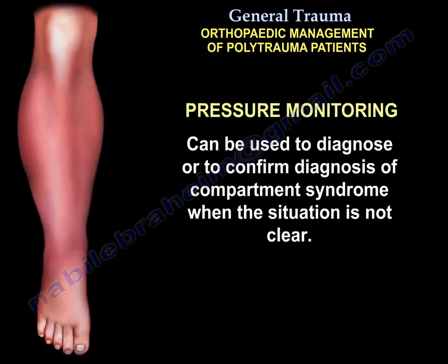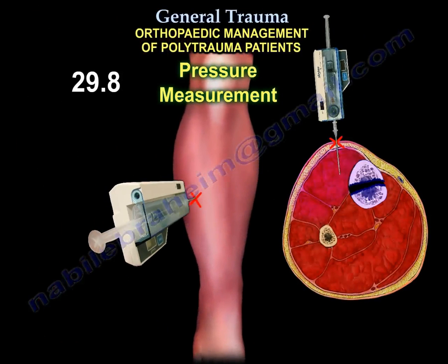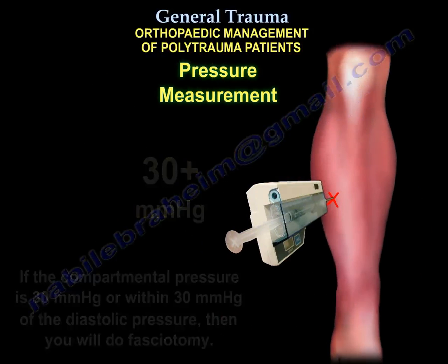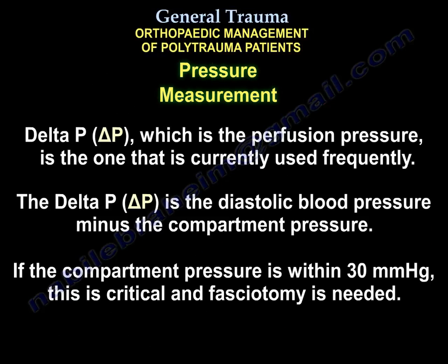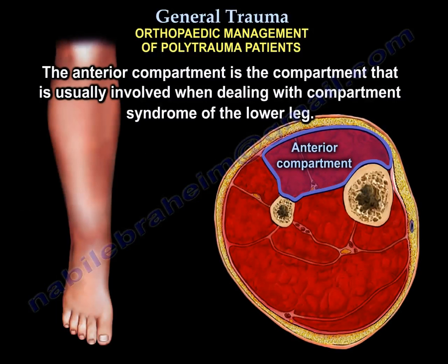Pressure measurement can confirm the diagnosis of compartment syndrome when the situation is unclear. If the pressure is 30 mmHg or within 30 mmHg of the diastolic pressure, perform fasciotomy. The delta P — perfusion pressure — is currently most frequently used: delta P equals diastolic pressure minus compartment pressure. If it is within 30 mmHg, that is critical and fasciotomy is needed. The anterior compartment is usually involved in the leg.